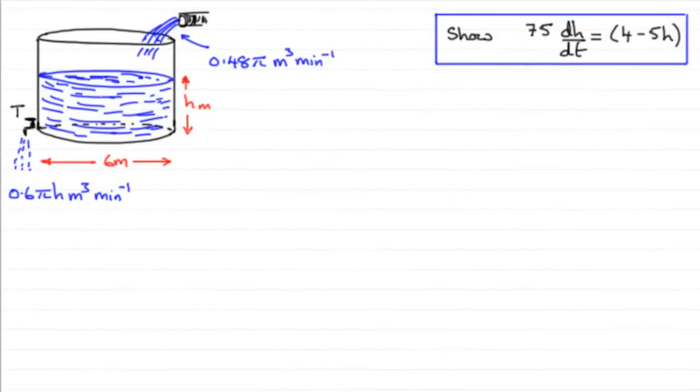Now for this question, what I've done is a sketch of what we're given. Basically we've got this cylindrical water tank, and we're told that it's got a diameter of 6 meters.